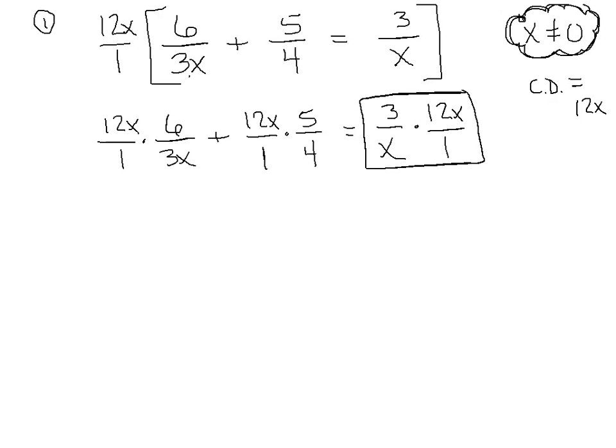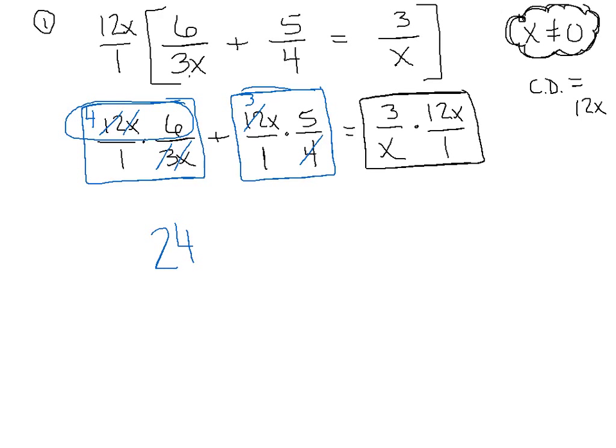Now how do we actually clean these up? Let's focus on this first fraction right here. Here's what I'm going to say. I'm going to say that x kills that x and I'm going to say 3 goes into that 12 four times. Now we're going to take what's left in that numerator and multiply straight across and 4 times 6 gives me 24. Moving on to my second fraction here, my second term. All I can say here is that 4 goes into 12 three times. I'm going to take now what's left. 3x times 5 gives me 15x. And then over here we could say that this x kills that x and 3 times 12 gives me 36.